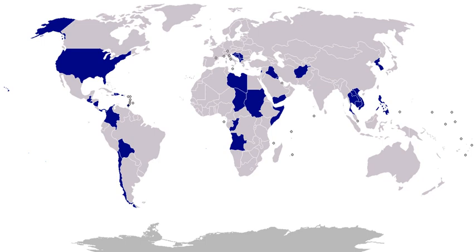1981, El Salvador: after a guerrilla offensive against the government of El Salvador, additional U.S. military advisors were sent to El Salvador, bringing the total to approximately 55, to assist in training government forces in counterinsurgency. 1981, Libya, 1st Gulf of Sidra incident: on August 19, 1981, U.S. planes based on the carrier USS Nimitz shot down two Libyan jets over the Gulf of Sidra after one of the Libyan jets had fired a heat-seeking missile. The United States periodically held freedom of navigation exercises in the Gulf of Sidra, claimed by Libya as territorial waters but considered international waters by the United States.